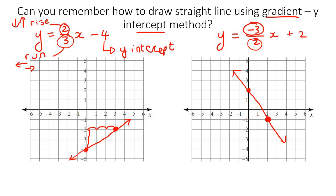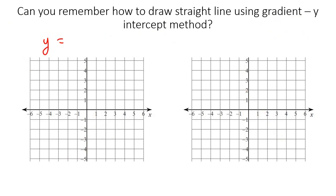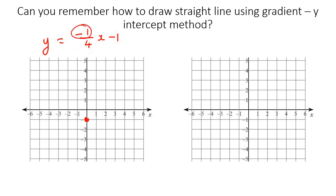Let's just do two more examples to make sure, because it's really going to make your absolute value understanding so much better. So let's say we have minus 1 over 4x minus 1. The y-intercept is minus 1, so we fill that in. The rise is minus 1, so we go 1 down, and then the run is 4, so it's 4 to the right — 1, 2, 3, 4 — and then we put our little dot and connect them.